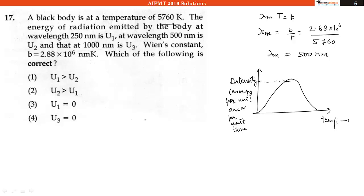Then we can easily find out this point is U2, and we can directly write U1 is less than U2, which is greater than U3.